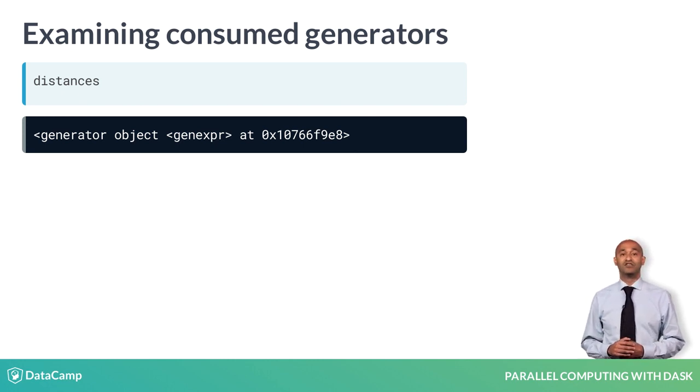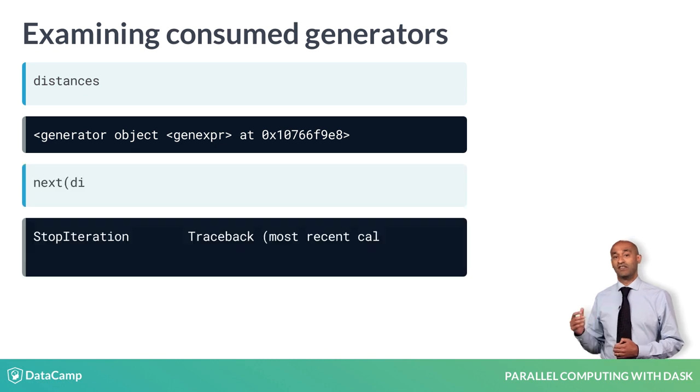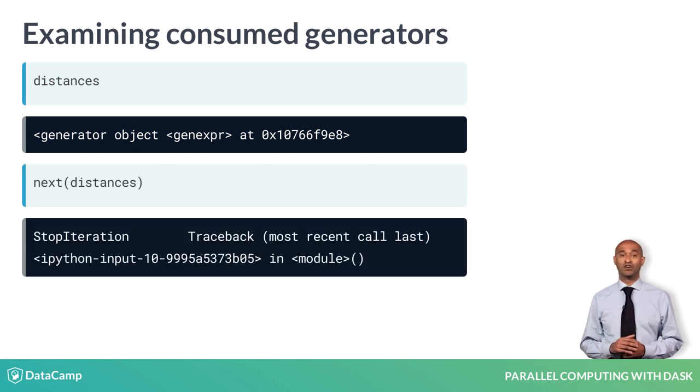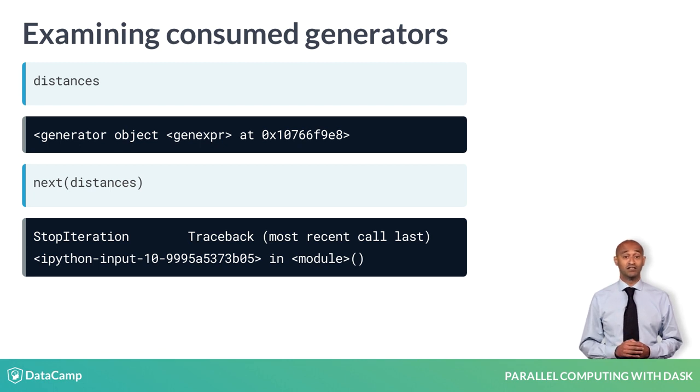However, they have been consumed after. That is, trying to use the next function on either produces a StopIteration exception. This tells users that the generator is exhausted.